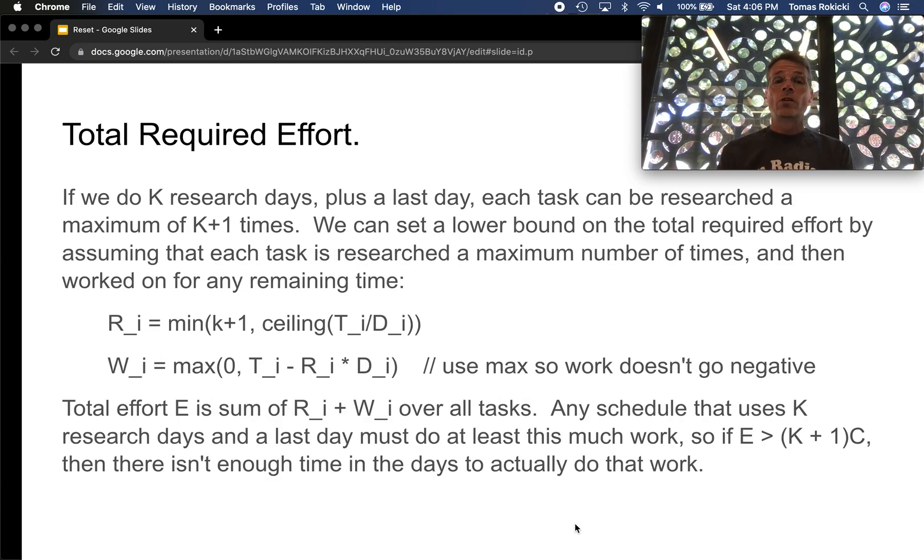So let's look at the first constraint. What is the total required effort? So I'm assuming we're going to do k research days plus a last day. And we assume that each task can be researched, therefore a maximum of k+1 times, because of course we can research in the last day. For any individual task, we can determine how many days we can research it. It's the minimum of k+1 or the ceiling of the duration of the task divided by the amount it's decreased by each research day. That is the amount of days we can research this task if we assume that we do k research days.